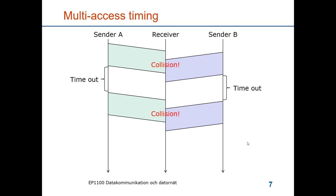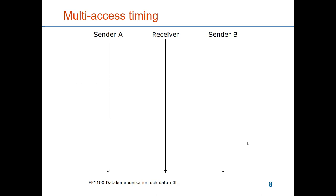So ARQ, as given by the data link protocol, doesn't work as intended. We have to modify the protocol so that it works for the setting where we have two or more senders. If they are synchronized with respect to the collision and the timeout, we can add a random time so that they don't try to retransmit at the same time.